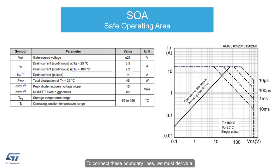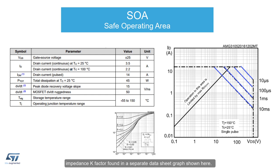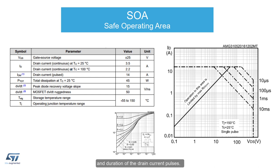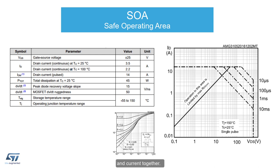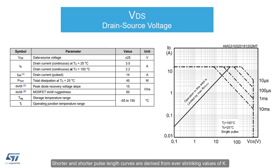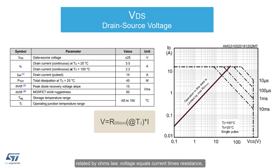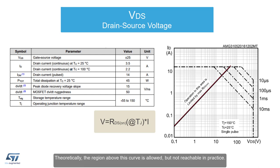The horizontal maximum overall drain current for pulsed operation is graphed in blue and equal to the absolute maximum pulse current, often package-limited. To connect these boundary lines, we derive a variable power dissipation limit by multiplying the static thermal resistance by the thermal impedance k-factor found in a separate datasheet graph. The k-factor relates a reduction in junction-to-case thermal resistance dependent on the duty cycle and duration of the drain current pulses. A single pulse lasting 10 milliseconds has a k-factor of 0.1. The shorter and/or less frequent the pulse, the lower the thermal resistance and higher the power dissipation allowed. This power is calculated by multiplying the drain voltage and current together. The DC operation curve always comes from a k-factor of 1, and shorter pulse length curves are derived from ever-shrinking values of k. Finally, the positive-sloping curve in red is a practical limit related to Ohm's law — voltage equals current times resistance — where the resistance is the maximum RDS-on of the device at 25°C. The region above this curve is theoretically allowed but not reachable in practice.